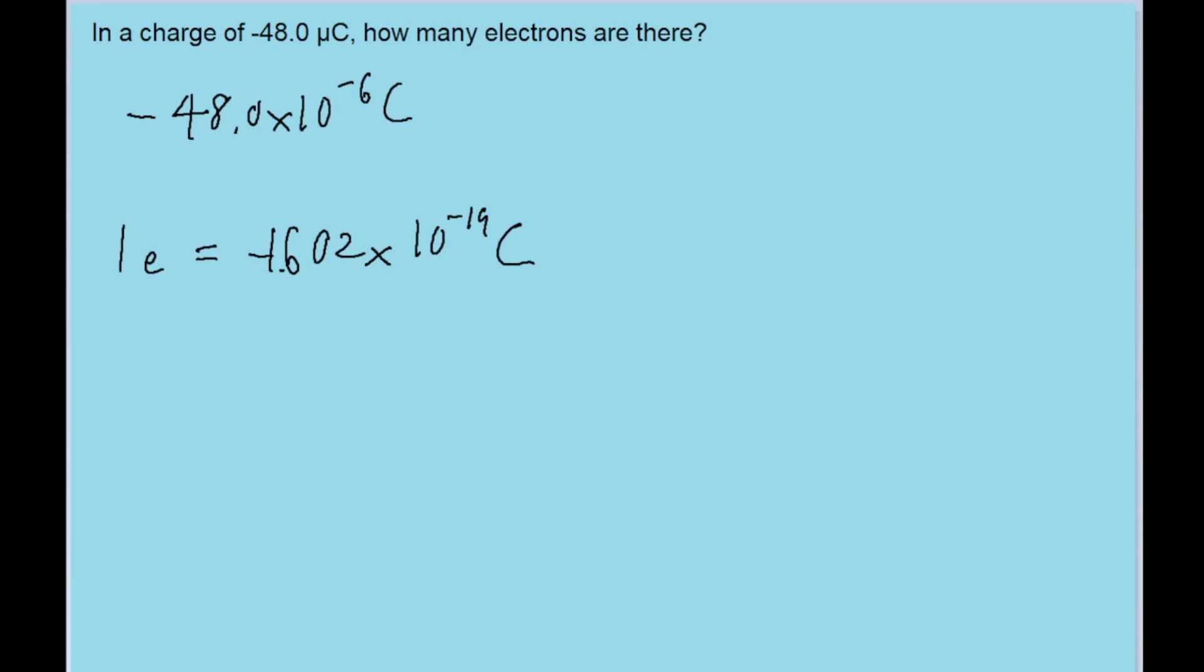So if we want to find out how many electrons make this charge up, all we have to do is divide this by the amount of charge in one electron, or as I like to write it in a chain link conversion type way: one electron per negative 1.602 times 10 to the negative 19 coulombs, that charge per electron.